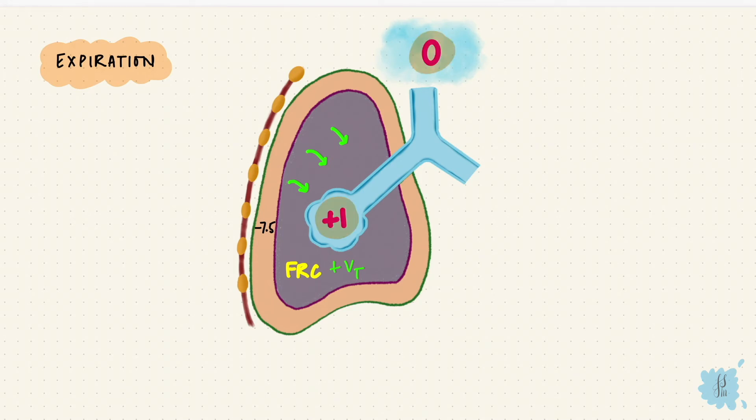Now you can see that the gradient has reversed. So air is going to move in the opposite direction. From high to low pressure, it moves from the lungs to the atmosphere. So it leaves the lungs, and what's left behind is now the functional residual capacity again. And at the end of expiration, the pleural pressure comes back up to minus 5 cm of water. So now we're at rest again.